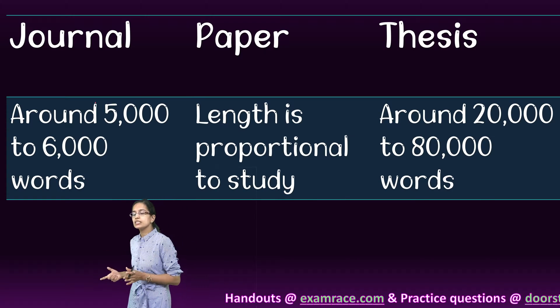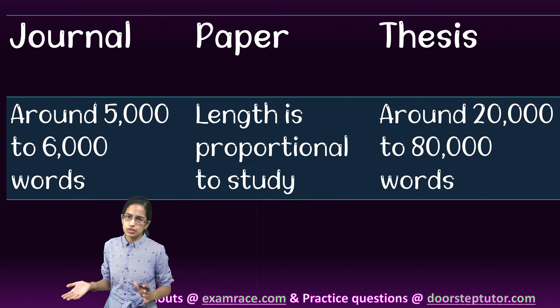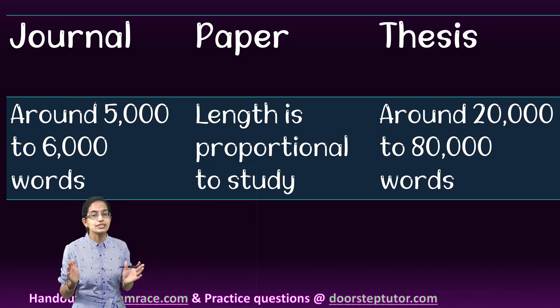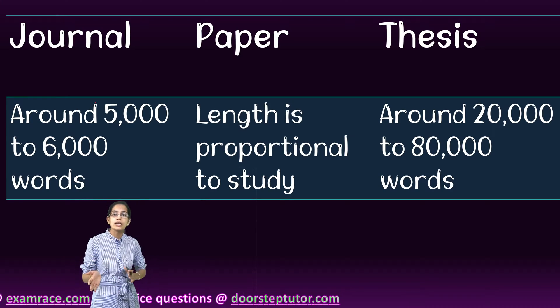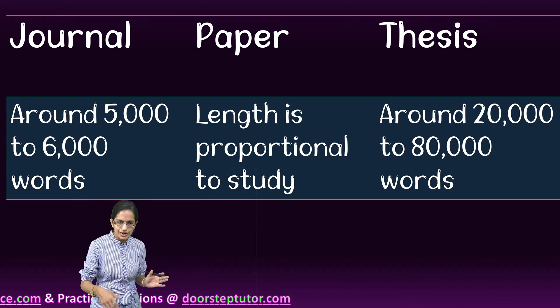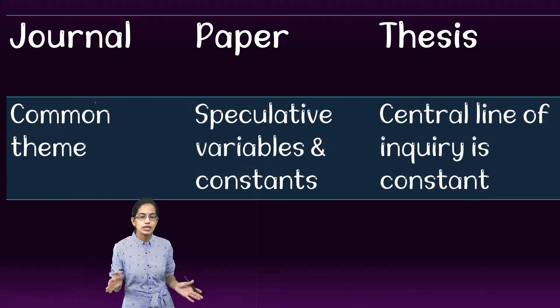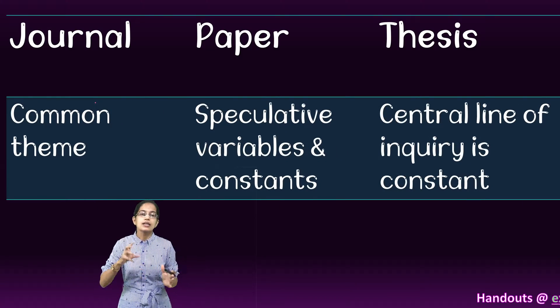For a journal, the usual length is 5,000 to 6,000 words, but for a thesis it can vary somewhere from 20,000 to 80,000 words, and therefore is much more in-depth and much bigger.